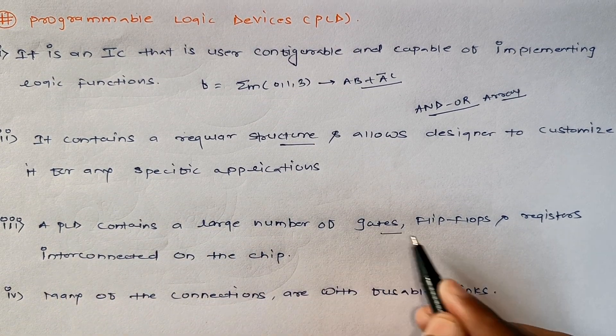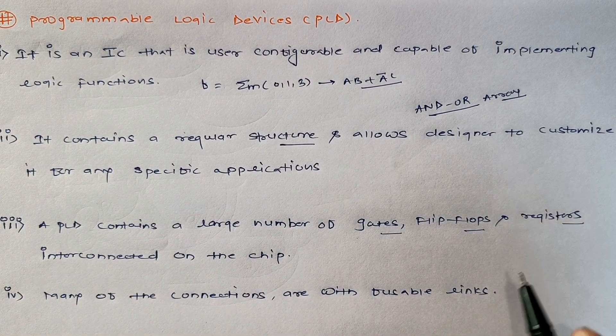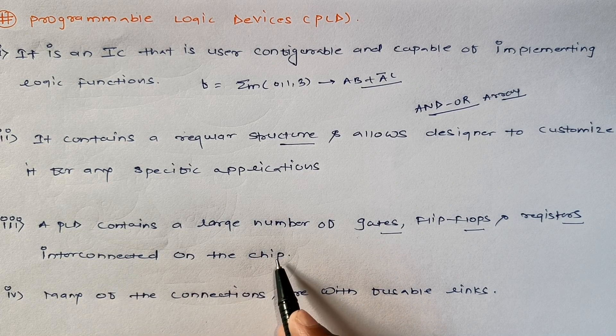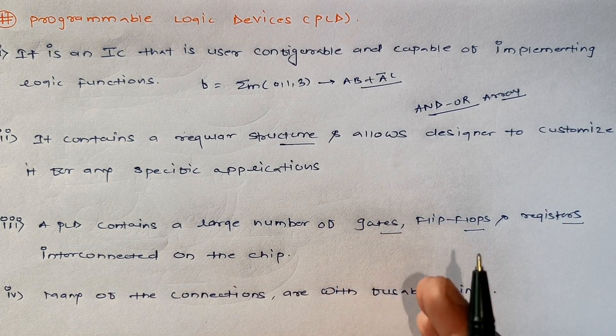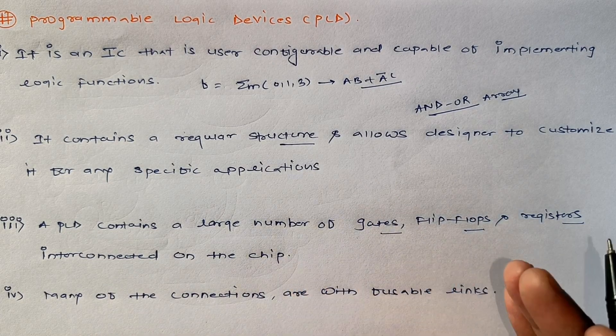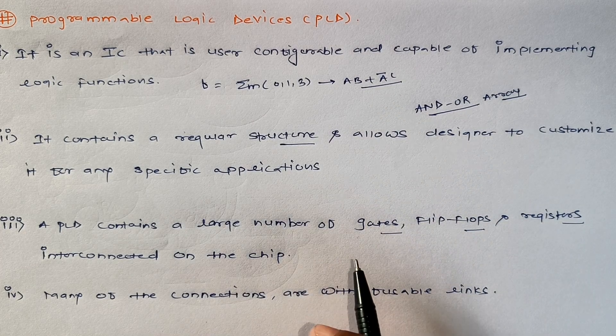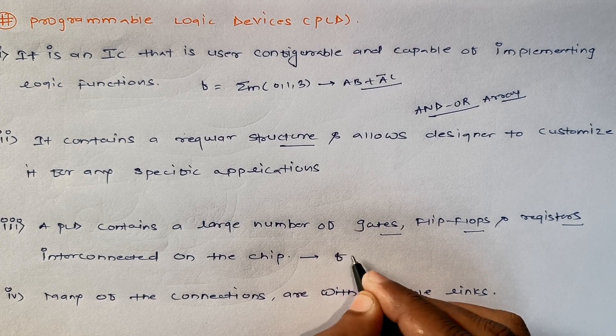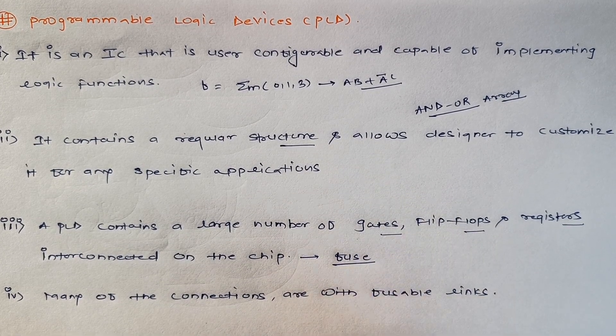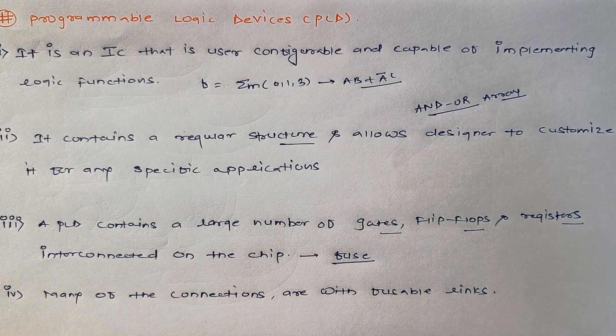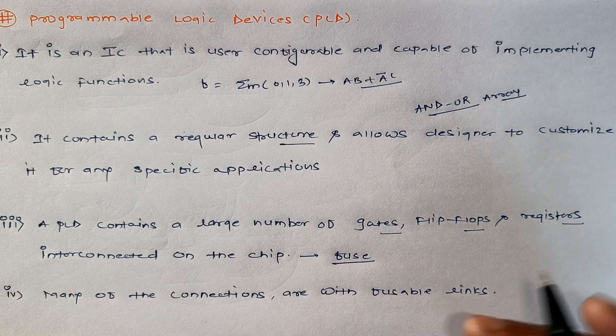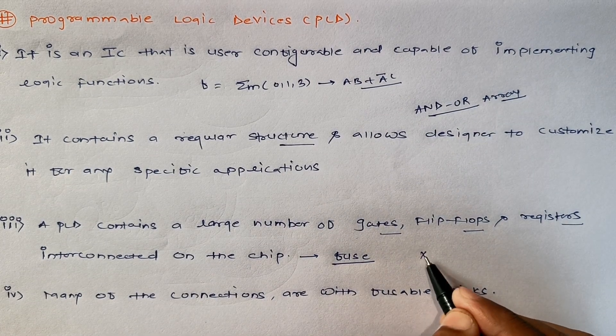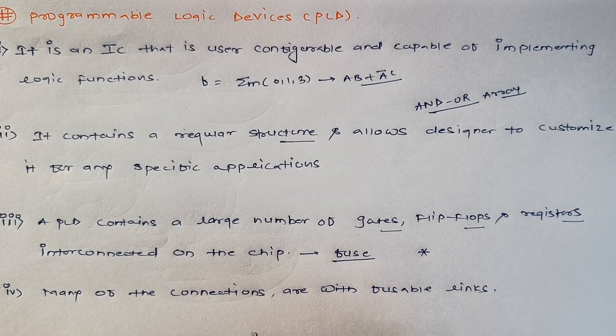Apart from it, PLD basically contains a large number of gates, flip-flops, and registers which are interconnected on the chip. That IC contains the structure of gates, flip-flops, and registers. They are interconnected on the chip and they can be either connected or disconnected using a term called fusible link.